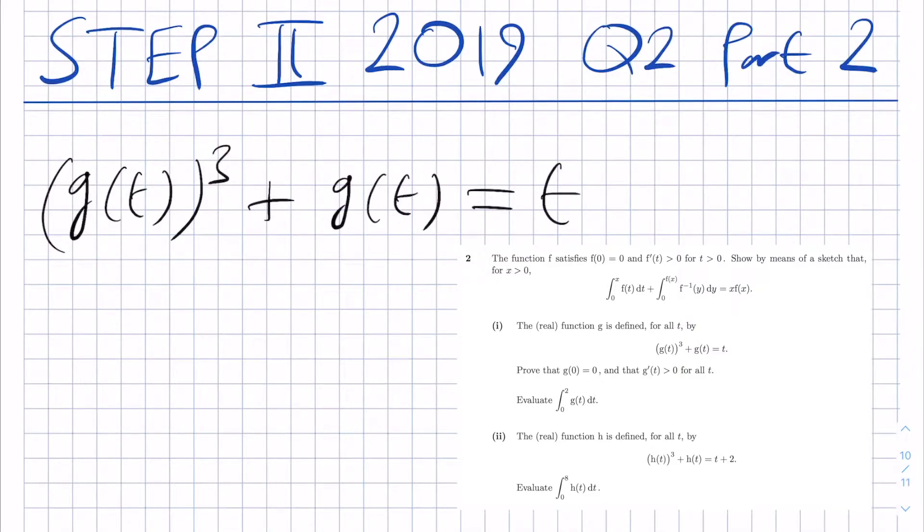Prove that g(0) is equal to 0 and that g prime of t is strictly greater than 0 for all t. Then we're asked to evaluate the integral from 0 up to 2 of g(t) dt.